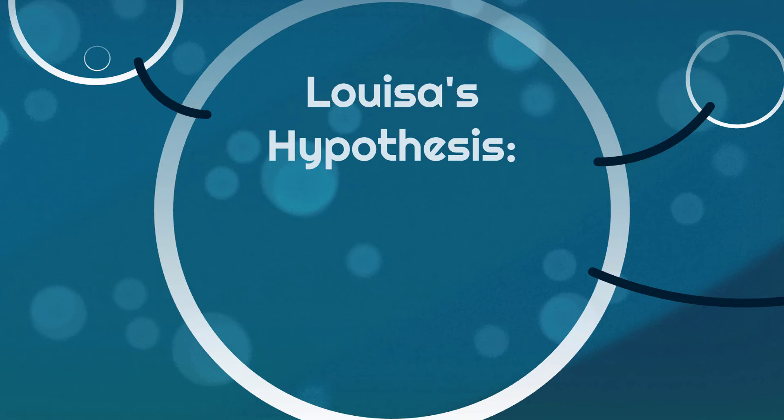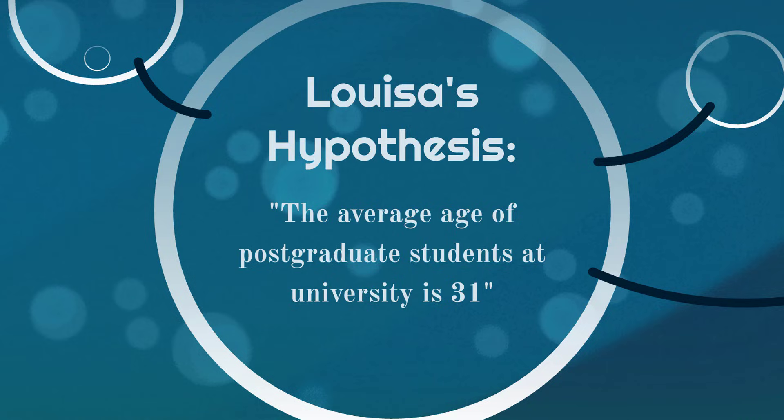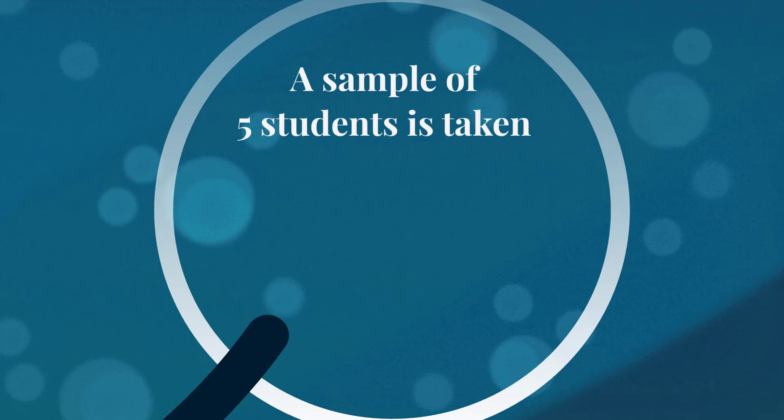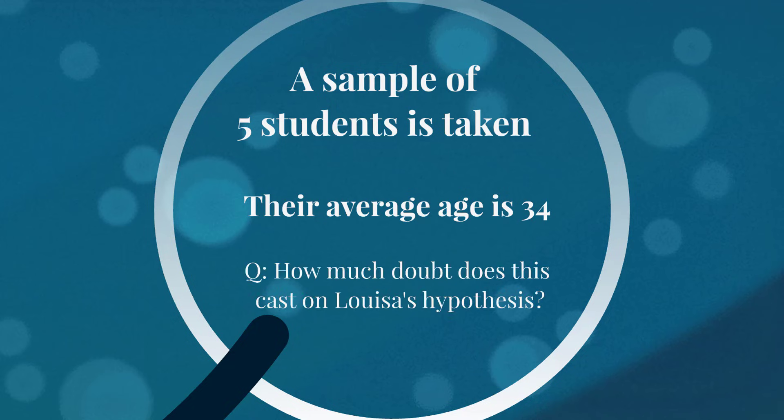Now let's try another example. Let's say that Louisa has a hypothesis and she says that the average age of postgraduate students at university is 31. How are we going to test this? We're going to have to take a sample. Let's say we've taken a sample of only five students this time, and we found that their average age is 34. Here's my question again: how much doubt does this cast on Louisa's hypothesis? So I hope you're getting the gist now. If it's 34, you might think, even though it's slightly higher than 31, which was Louisa's hypothesis, we've only got a sample of five students. Maybe we just selected five that were a little bit older than the average. And if we selected another five, maybe that average age would be a lot lower than that. So you probably think it doesn't cast that much doubt at this stage.